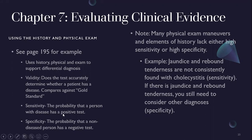Sensitivity is the probability that a person with a disease has a positive test — like OTC COVID tests with about 80% sensitivity, meaning if you have COVID there's an 80% chance the test will be positive. Specificity is the probability that a person without the disease has a negative test. For example, jaundice and rebound tenderness are not consistently found with cholecystitis (sensitivity), and if present you still need to consider other diagnoses (specificity) — they don't point to just one thing.